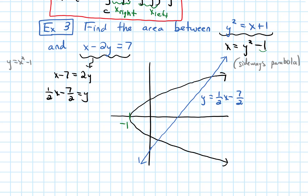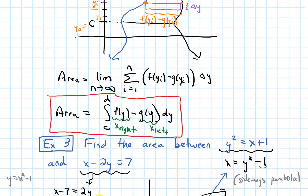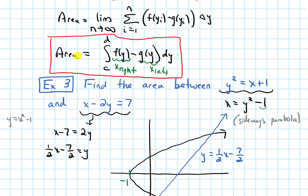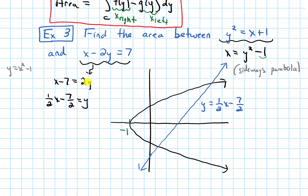If I think about this region I'm trying to find the area of in terms of a right function and a left function, the way I can figure out which one's which is to draw a horizontal line corresponding to these horizontal rectangles. If I draw a horizontal line somewhere in my region, the function it hits on the right is this line, and the function it hits on the left is that parabola. No matter where I draw that horizontal line, the function on the right is the line and the function on the left is the parabola. However, if we were to draw vertical lines, the top and bottom function does change somewhere.